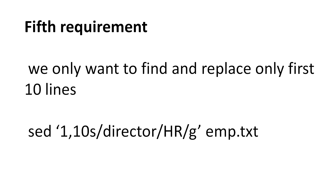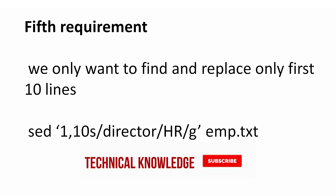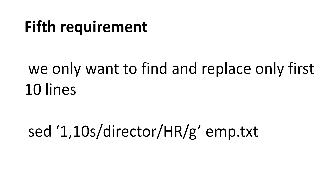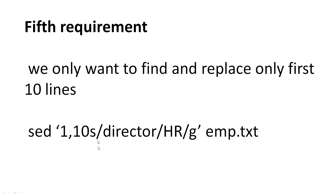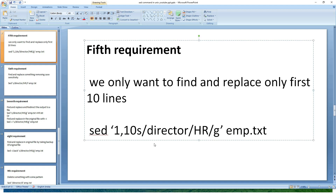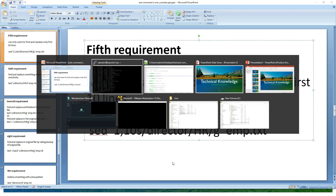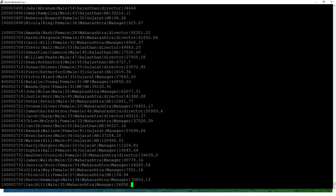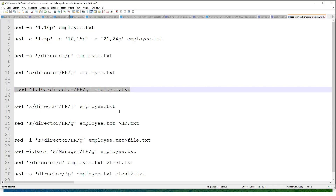The fifth requirement is to find and replace only within a range of lines — not the entire file. If I want to find and replace in the first 10 lines, I specify the address as 1,10 before the substitution: sed '1,10s/director/HR/g'. If I want to replace in the first 20 lines, I give 1,20s. Running this command, in my first 10 lines I have replaced director with HR.